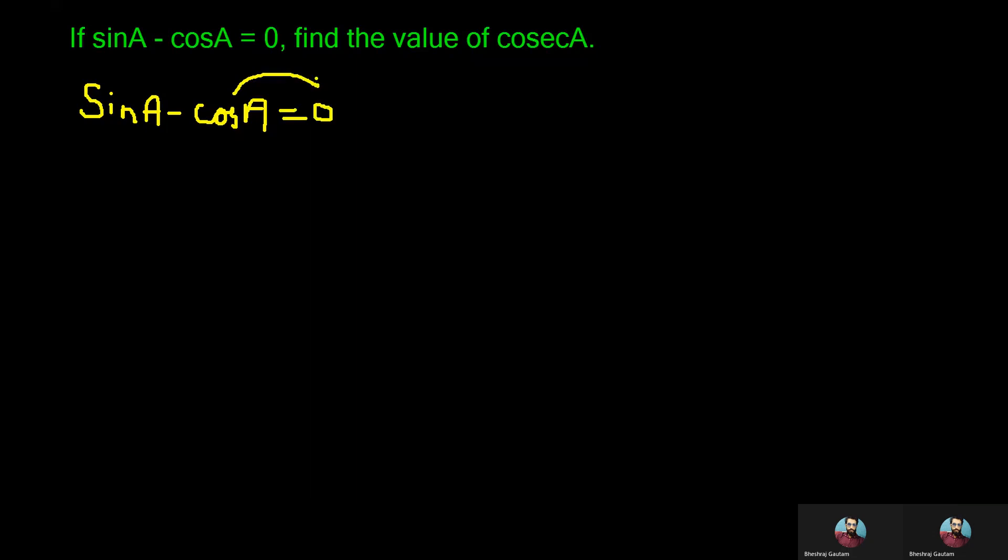Now first of all we take this minus cosA to the right side and which on changing the sign becomes plus cosA. So we write sinA is equal to cosA here.